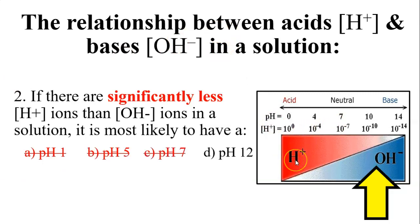It's not going to be pH of five. It's not going to be pH of seven, where they're equal. Let's say pH of 12 is the best answer of those four choices, that there are significantly less hydrogen ions compared to hydroxide ions.